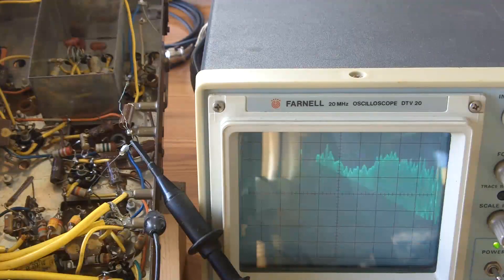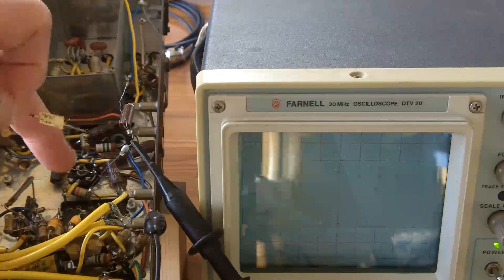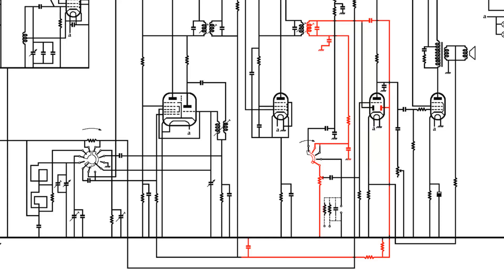Hi, my name's Andy and in the previous video I'd started to move on to the input of the final audio output valve, but before I do I want to step back to the second diode of the double diode triode in the audio frequency amplifier. In the previous video I said that that diode rectified the signal and it went on to be smoothed and provide the negative AVC voltage to control the gain of the earlier stages. I realize that's not a very helpful statement with the circuit looking like that, so I've redrawn the circuit and hopefully it will make things a little easier to understand.